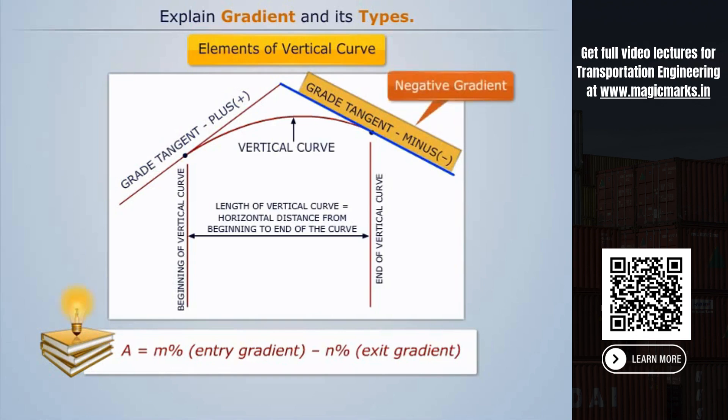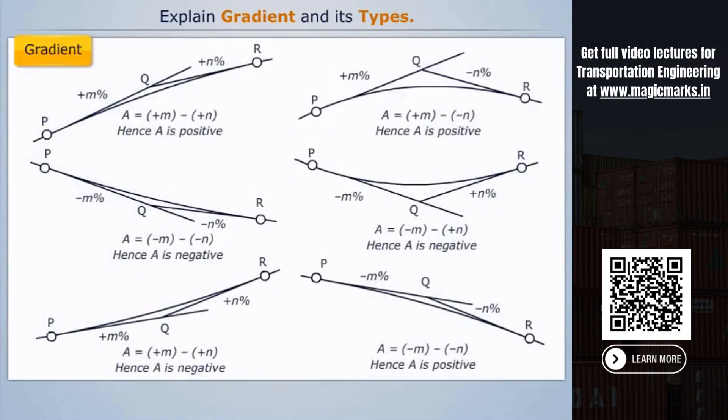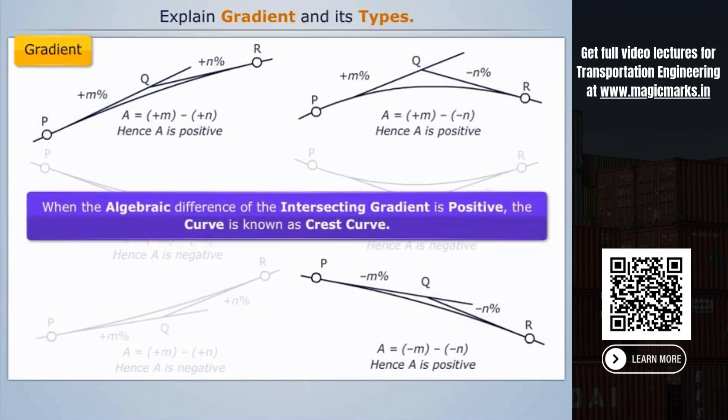Here are the six different combinations of gradients. When the algebraic difference of the intersecting gradient is positive, the curve is known as a crest curve.